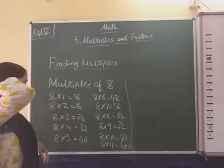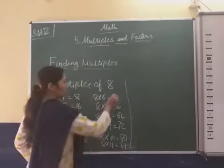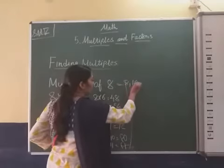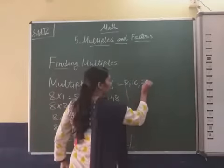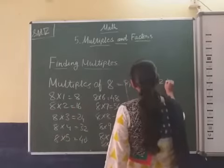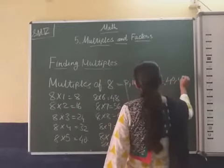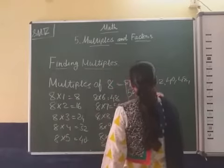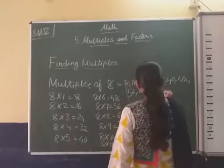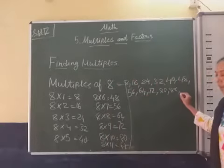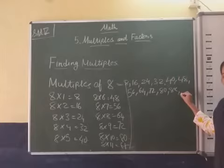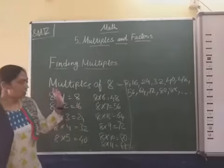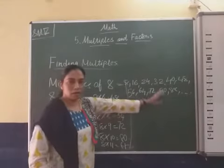The multiples of 8 are: 8, 16, 24, 32, 40, 48, 56, 64, 72, 80, 88, and so on — we don't put a full stop, we write comma and so on, because they are unlimited.